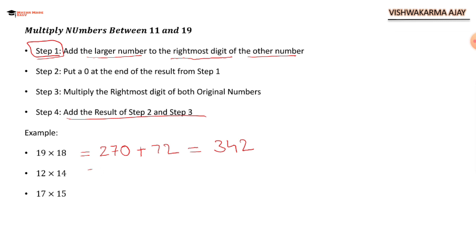12 times 14: 14 is bigger, so 14 plus 2 is 16. Put 0 at the end: 160. Plus 4 times 2 is 8. So the result is 168.